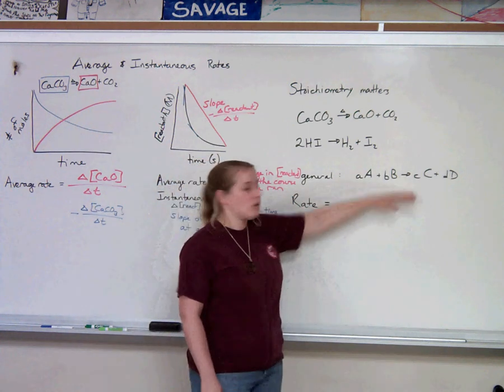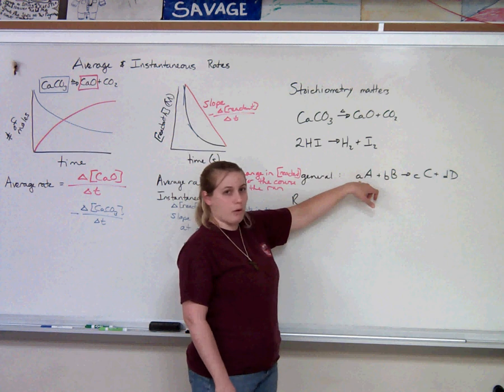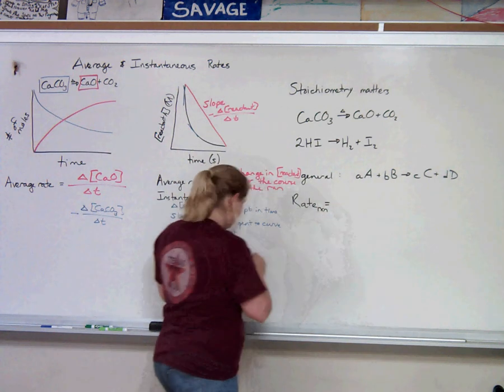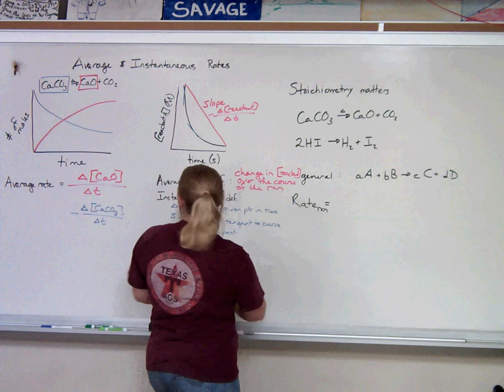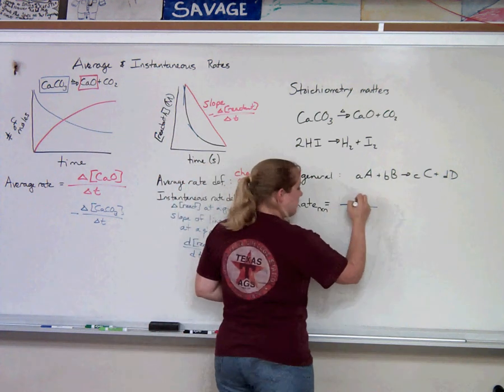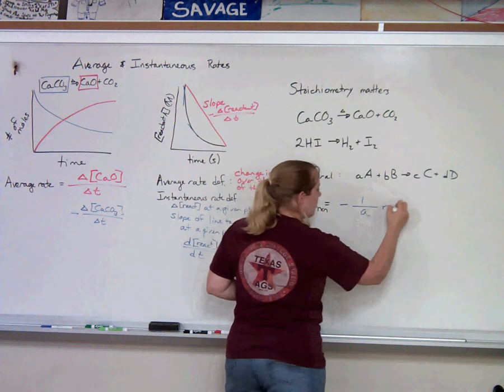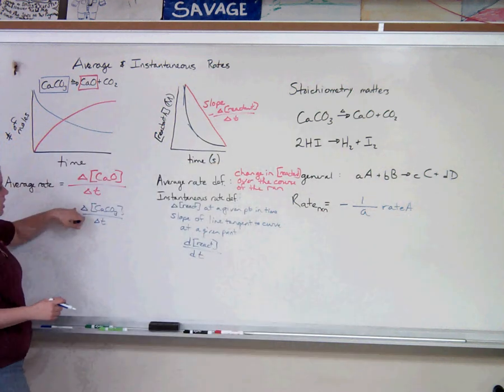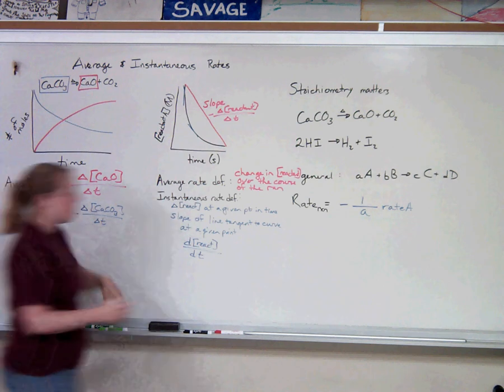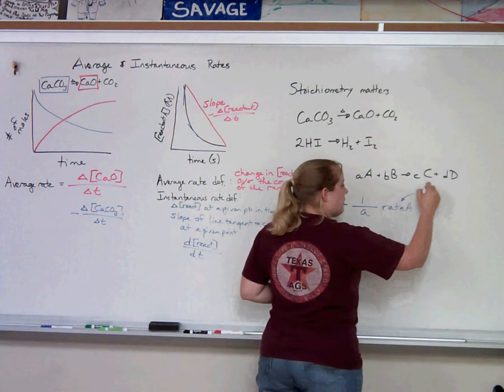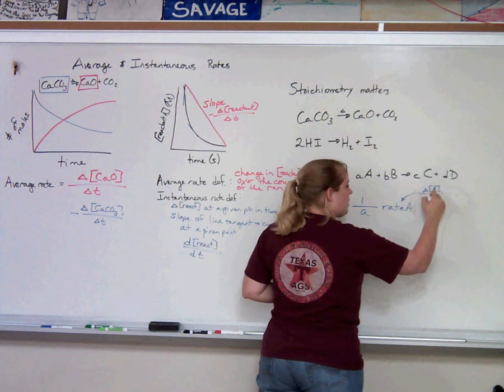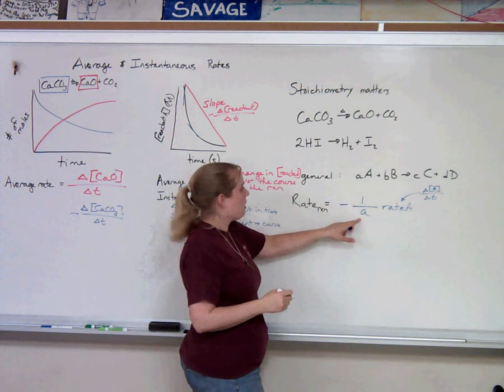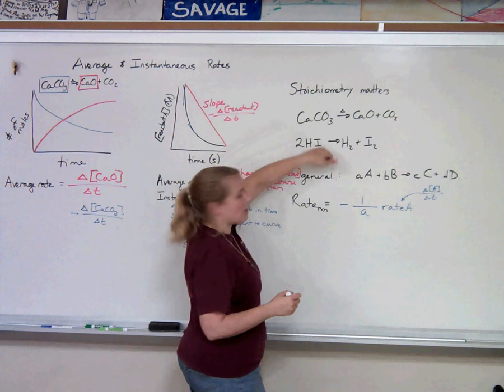For any general equation where the little letters are our coefficients and the big letters represent our chemicals, the rate of the reaction, the rate of the whole reaction, is equal to the disappearance of the reactants. So the rate of the reactants, and again we said over here, rate is the change in concentration of the reactant over change in time. So this rate means change in concentration of A over change in time. And it's a disappearance, and we have to multiply it by the reciprocal of its coefficient. So in this case, one over two times the rate of HI is the rate of the reaction.